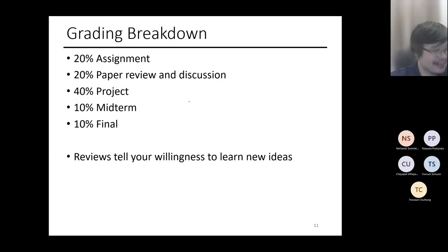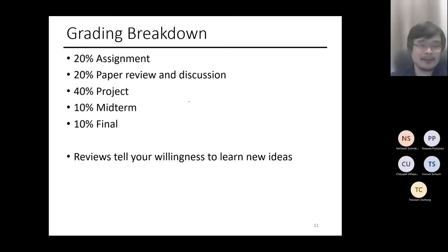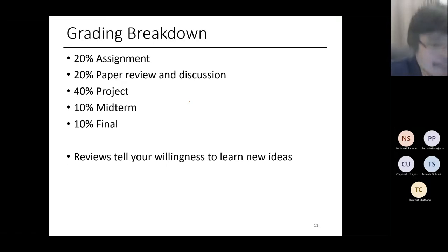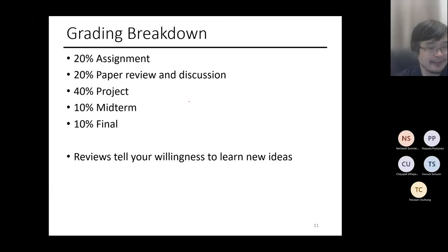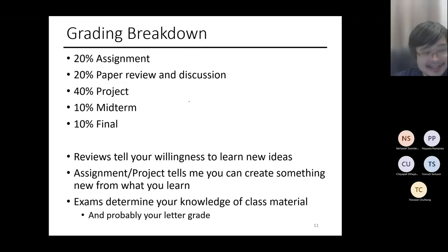Basically, if you get full credit on everything else but skip the final, you'll still get an A. I make it such that midterm and final have lower impact on your overall grade. I can test you as much as I want but it won't heavily impact your grade. The rest - 60% of it - you get by default if you submit something that looks like you did the work. The review shows your willingness to learn new ideas, assignments and projects show you can create something, and the exam determines your knowledge.